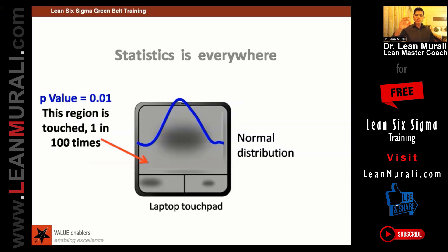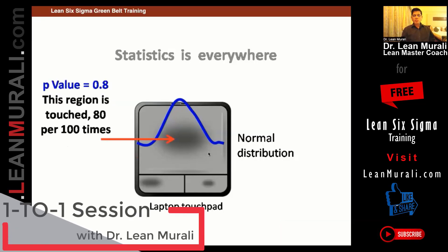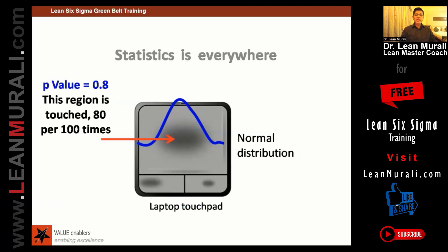If the p-value is 0.01, it means that this region is touched 1 in 100 times. If the p-value is 0.03, it means 3 out of 100 times that I have touched it. If the p-value is 0.8, that means 80 out of 100 times that I have touched it.